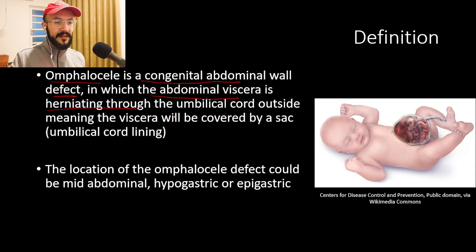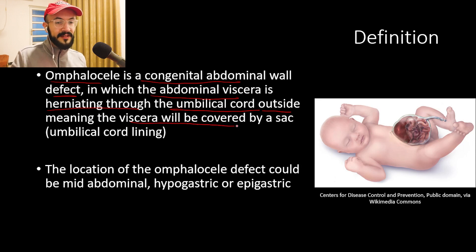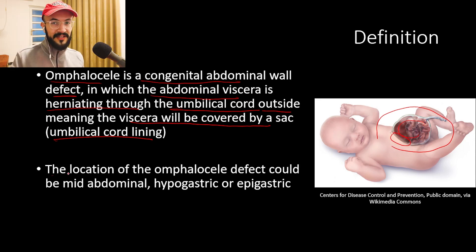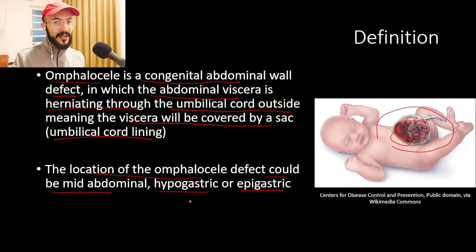In omphalocele, the abdominal viscera herniate through a defect in the abdomen, specifically through the umbilical cord to the outside environment. Since the viscera is herniating through the umbilical cord, it will be covered by a sac — the umbilical cord lining, as seen in this picture. The location of the omphalocele defect could be mid-abdominal, hypogastric, or epigastric.